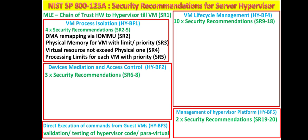The last security recommendation for VM process isolation is that a processing limit should be defined for each VM, along with the priority of that allocation in case of resource contention between VMs.